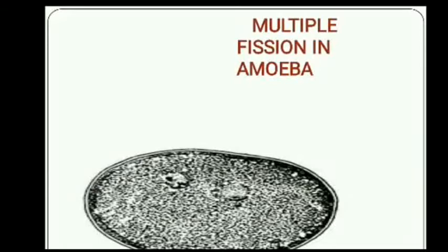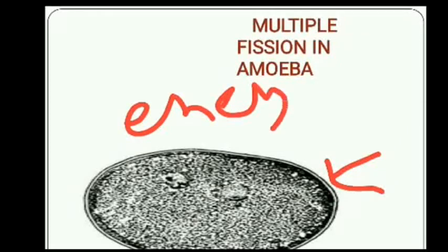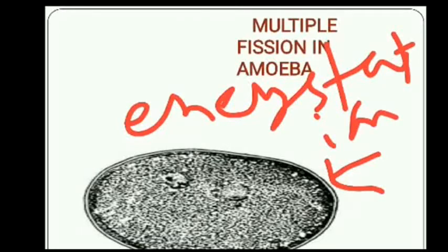During unfavorable conditions, amoeba withdraws its pseudopodia and secretes a three-layer thick covering called the cyst wall around itself. This phenomenon is called encystation. On the return of favorable conditions, the encysted amoeba divides by multiple fission and produces minute amoeba called pseudopodiospores.